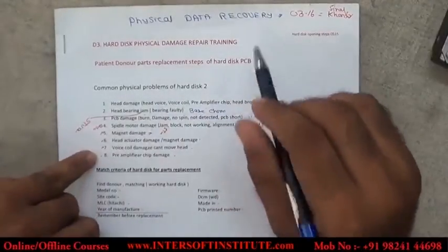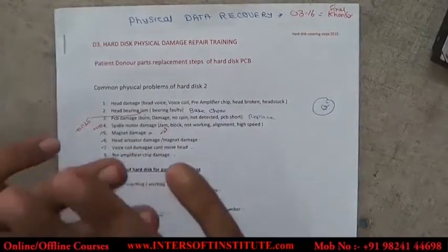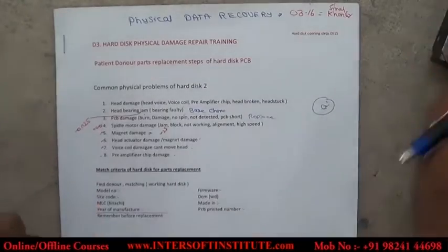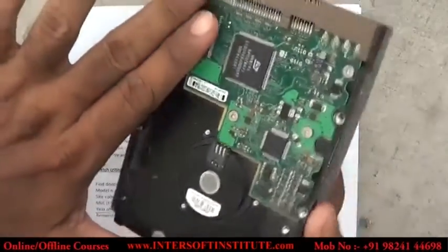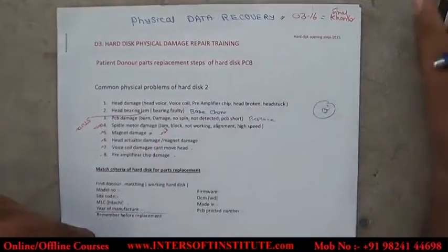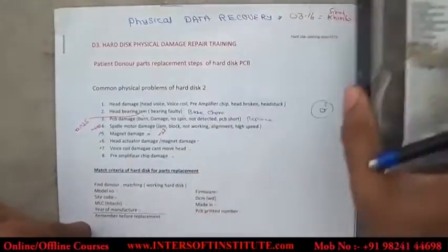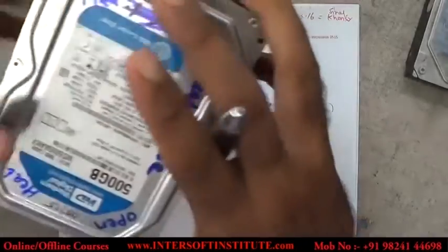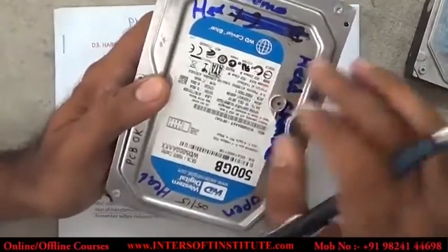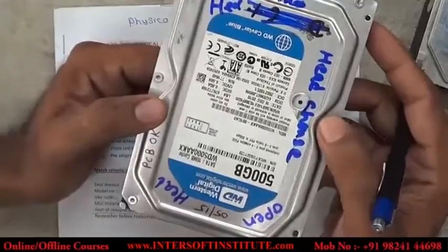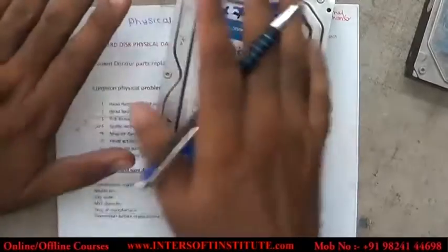Physical data recovery — what is physical data recovery? So far we have seen logical data recovery where we don't have to open the hard disk, and PCB-related problems where we repair the PCB. Now we go into physical data recovery, which means internal parts are damaged. If the head is damaged and the disk gives 11 beeps and cannot read data, we have to replace the head. If the magnet is damaged, we replace the magnet — whatever replacement is required.